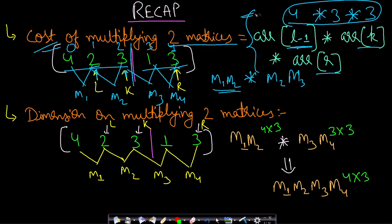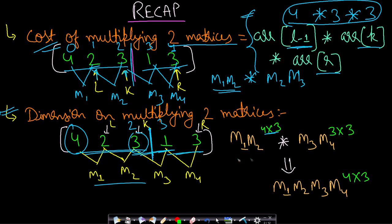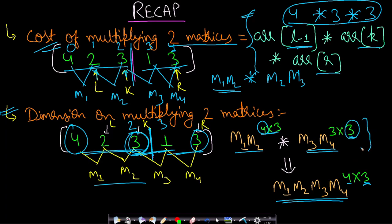I derived this in the MCM recursion video, so I hope you have already watched that. The second point is the dimension when multiplying two matrices. If you partition between index 2 and 3, the first part M1M2 has dimension 4×3, and the second part M3M4 has dimension 3×3. The resultant matrix M1M2M3M4 will have rows equal to the number of rows in the left matrix and columns equal to the number of columns in the right matrix. I will be referring to this formula again and again.